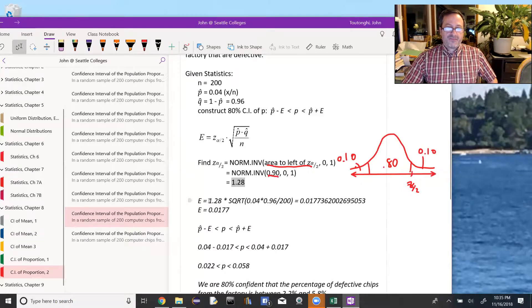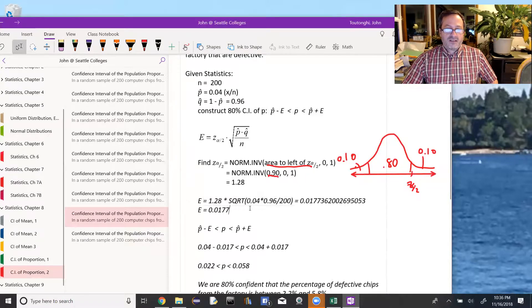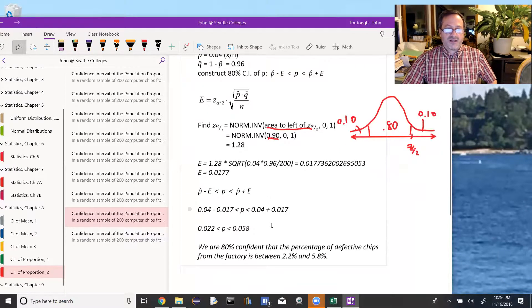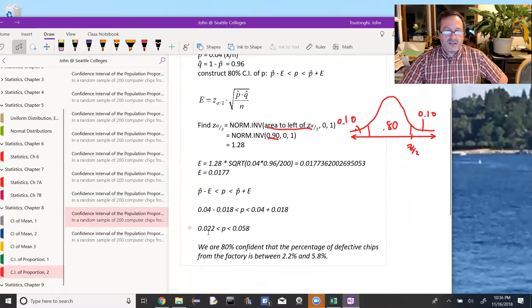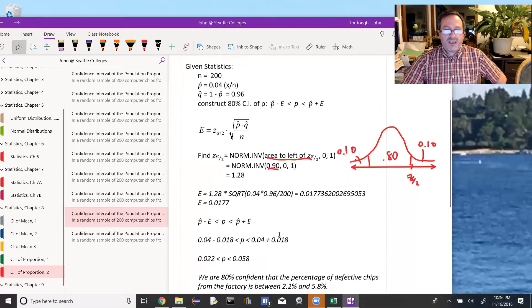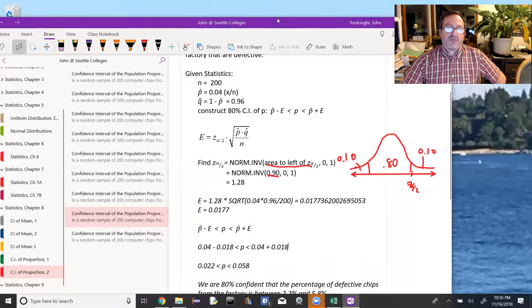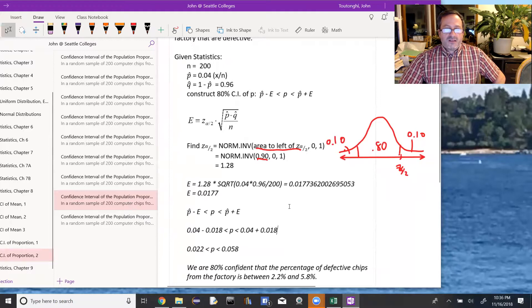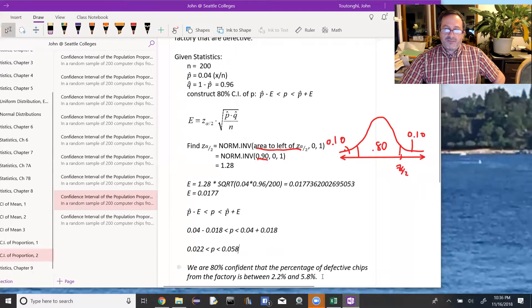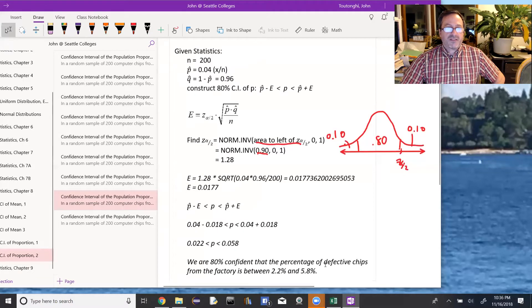That allows us to find the error. Just use Excel. 1.28 times the square root of p hat q hat over n. We get our error. Hopefully we probably want to wait to round on all these things until the very end. You saw I actually made a rounding error earlier. And then we're 80% confident that the population proportion lies between these two values. All right, that'll do it for confidence intervals of the proportion. Should get you to be able to do most of those problems on the homework.